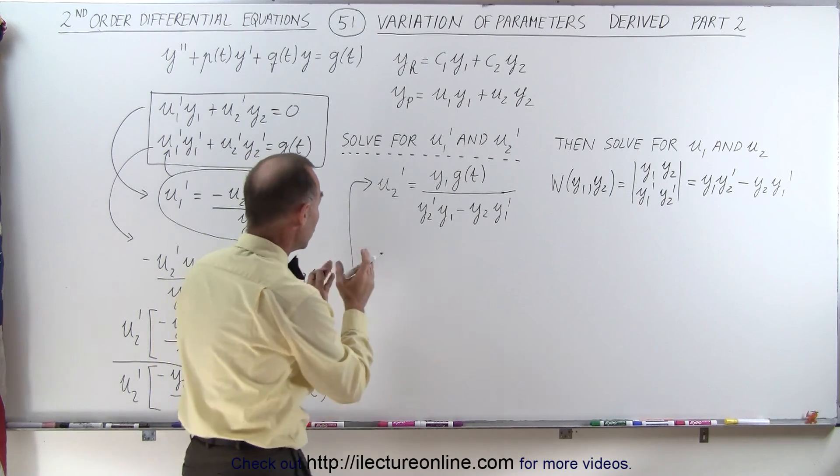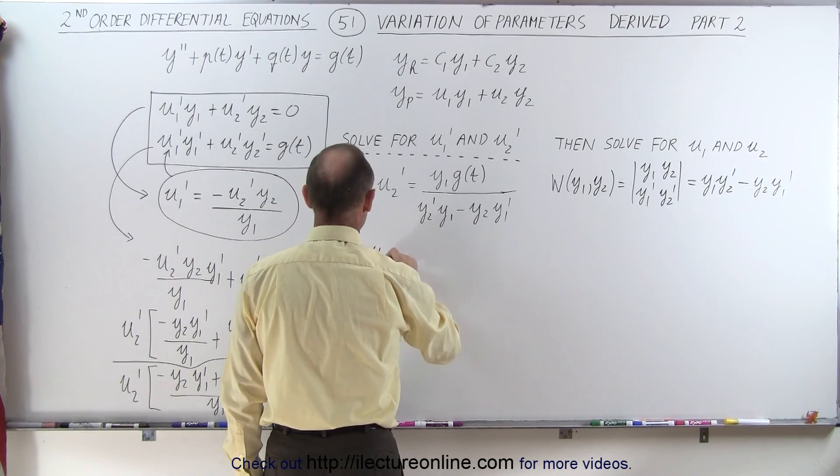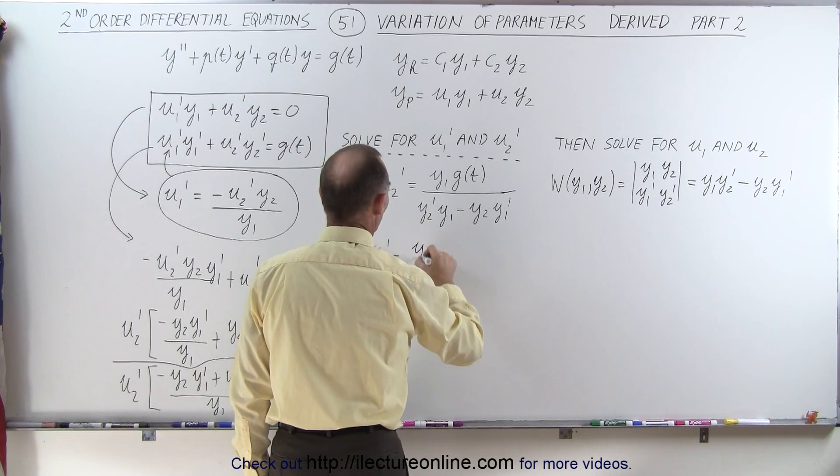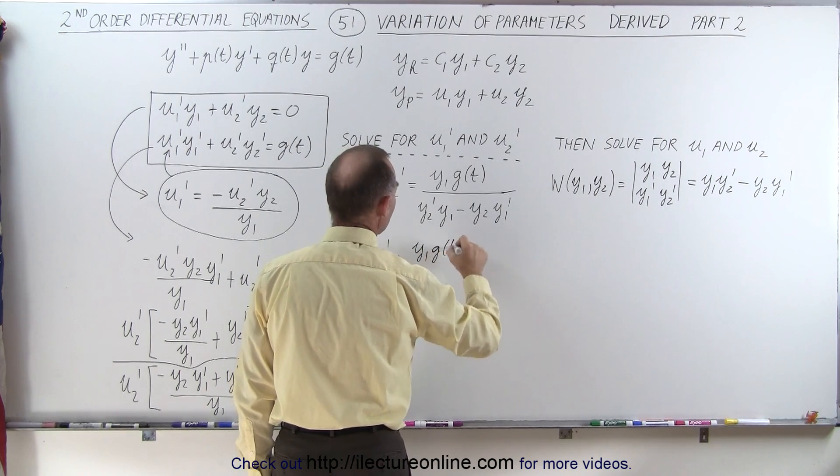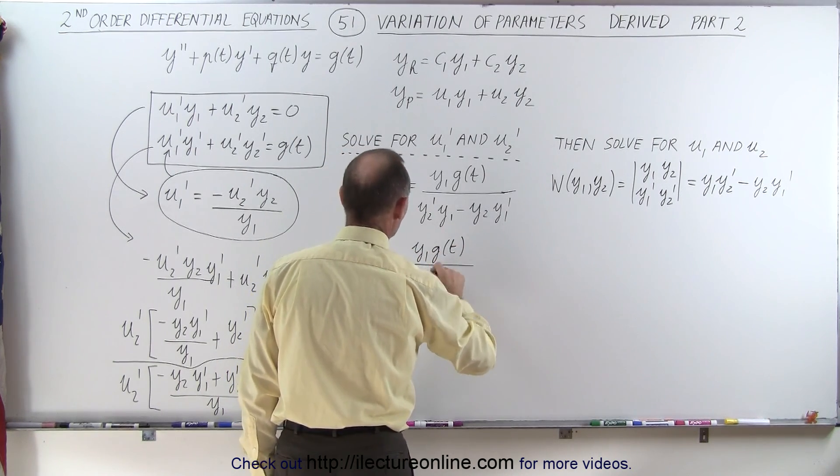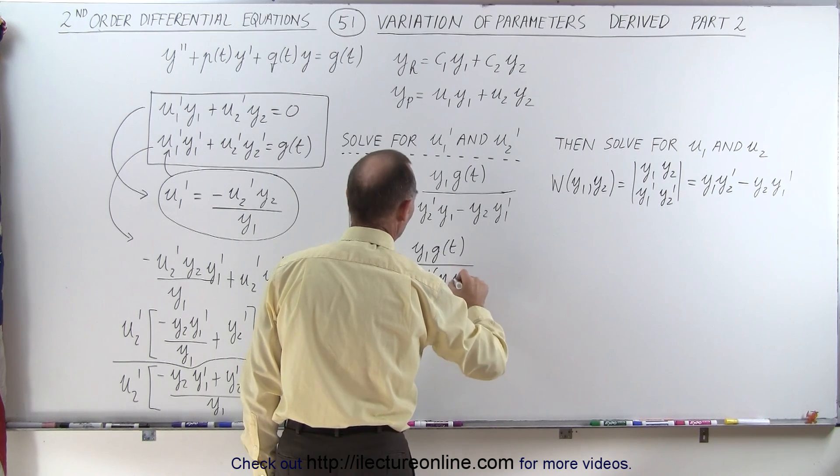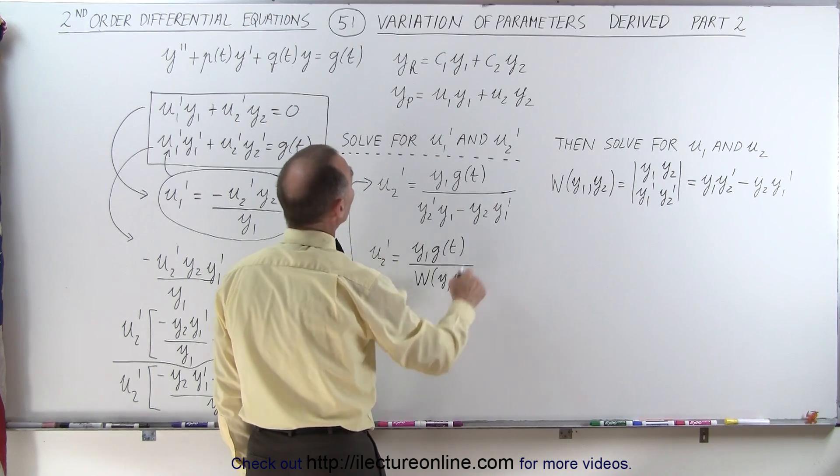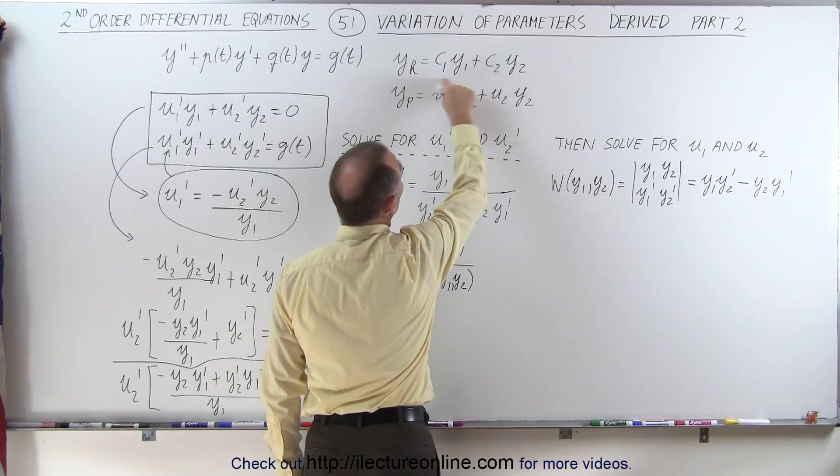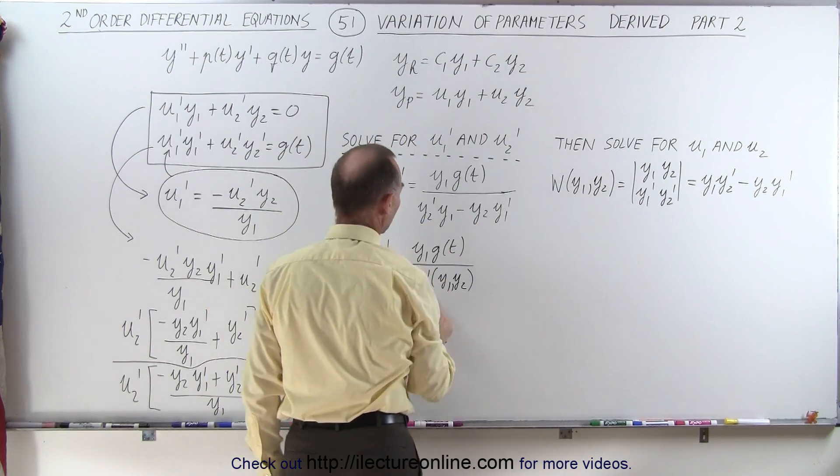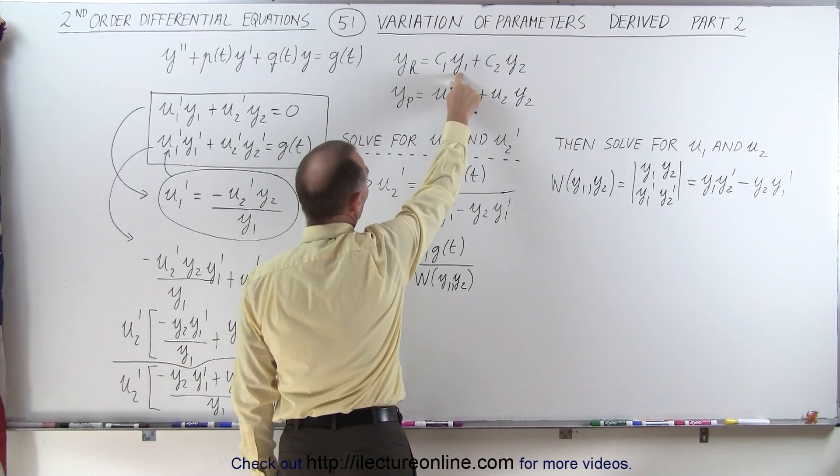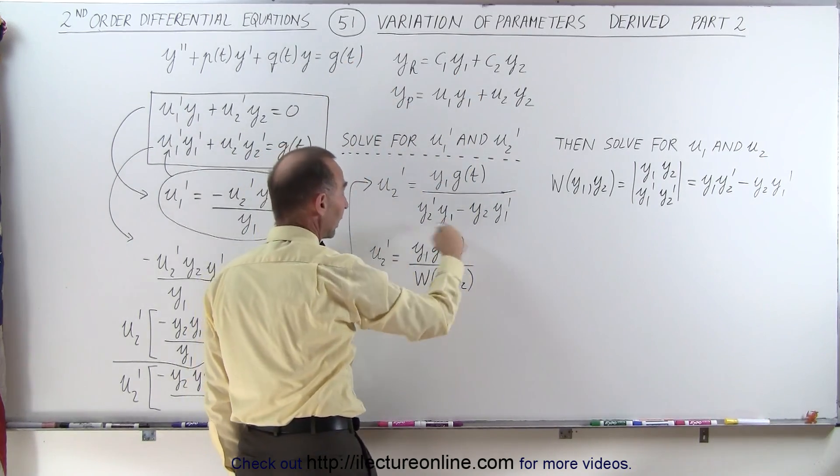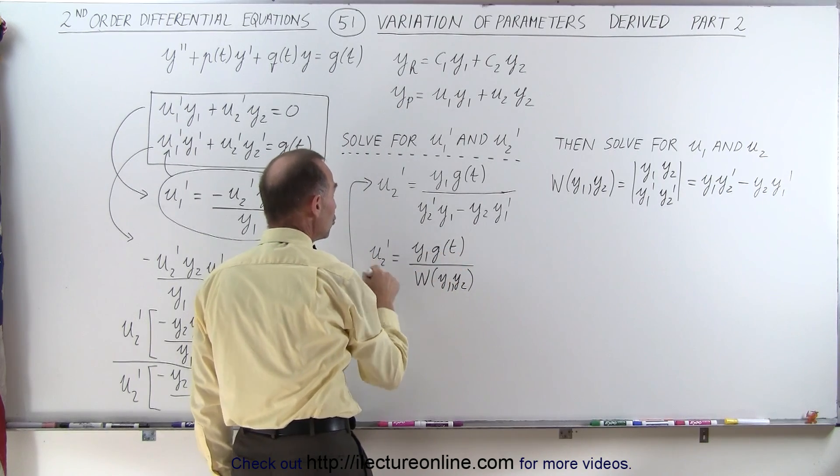Which means we can write u2' as follows. u2' can be written as y1 g of t divided by the Wronskian of y1 and y2. Remember, we're going to find y1 and y2 using the homogeneous solution right here of the equation. y1 again will be taken out of the homogeneous part, and g of t is simply taken out of there. So taking all that together will give us u2'.